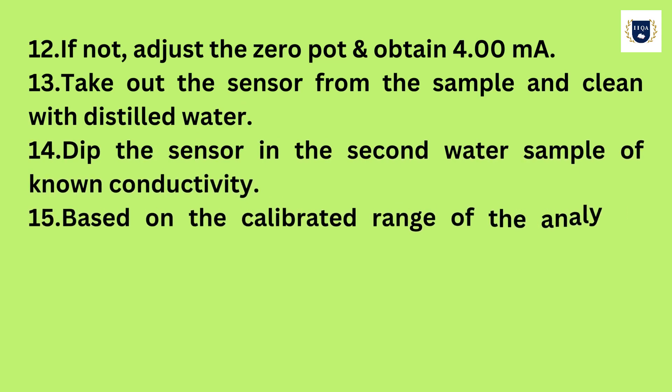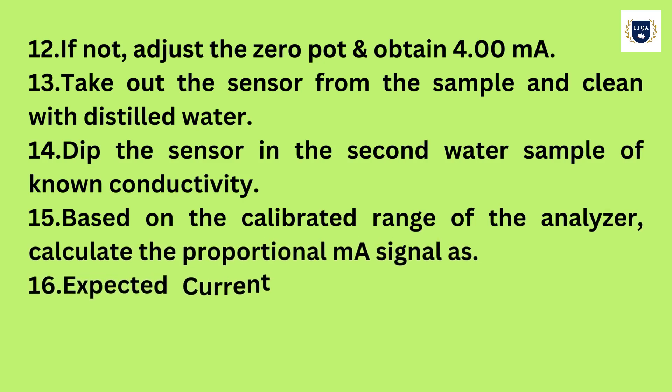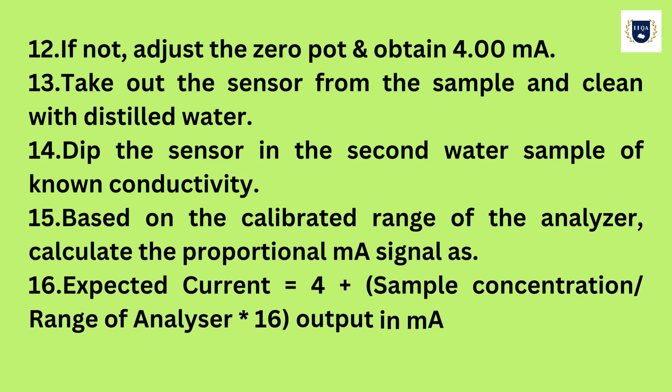14. Dip the sensor in the second water sample of known conductivity. 15. Based on the calibrated range of the analyzer, calculate the proportional milliamps signal as: 16. Expected current = 4 + (sample concentration / range of analyzer) × 16 output in milliamps.